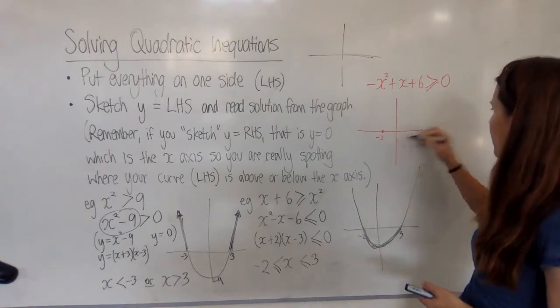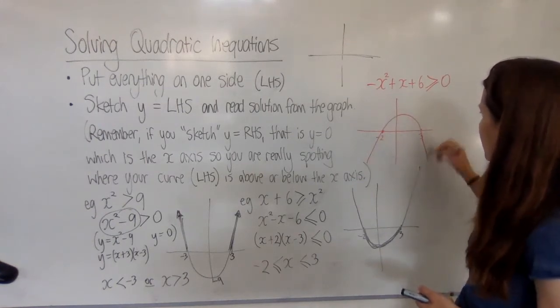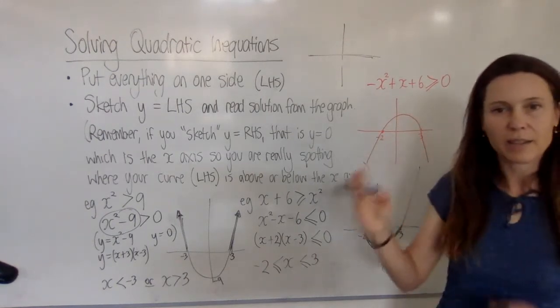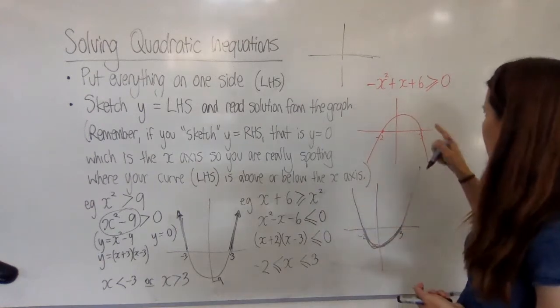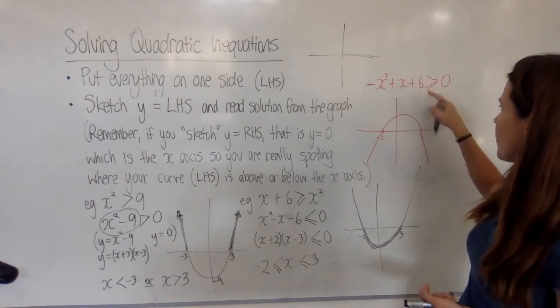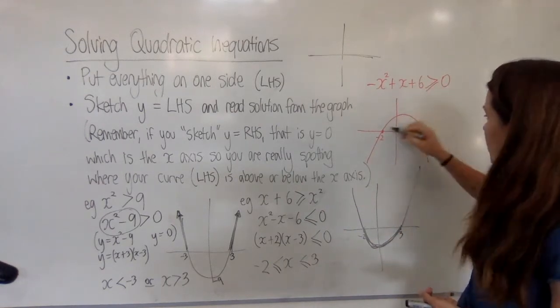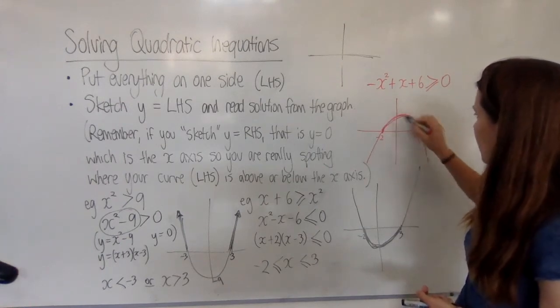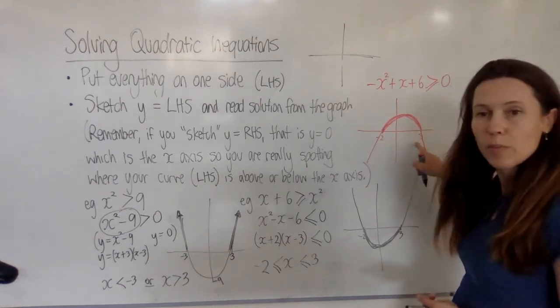Minus 2 and 3, because if I factorize this, I'm still going to get those same two zeros, and we would have been finding the bit where the parabola is greater than or equal to 0, which is still this section here that has x values between these two points.